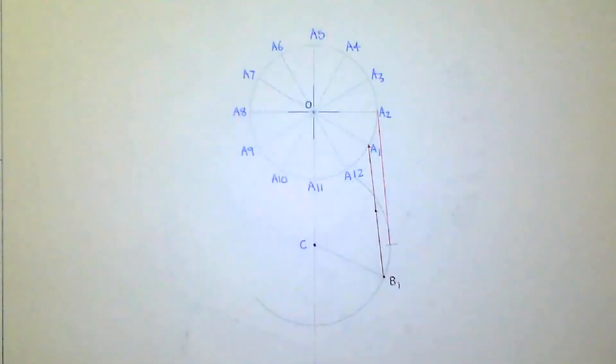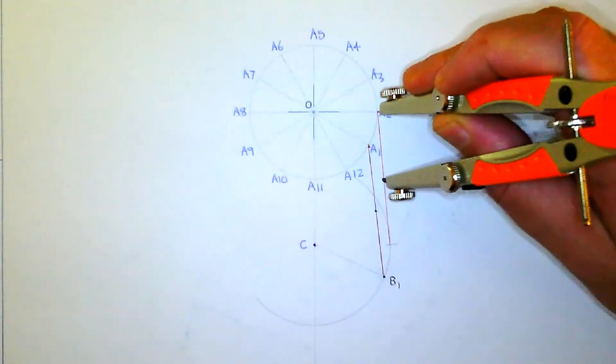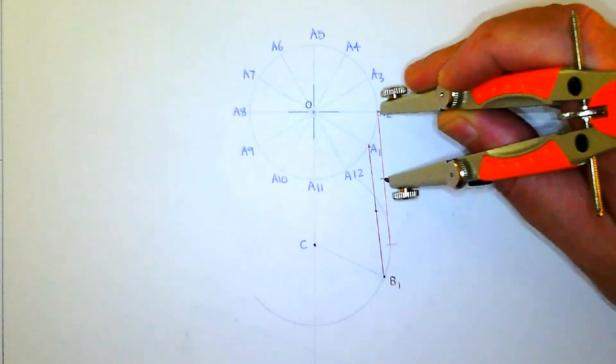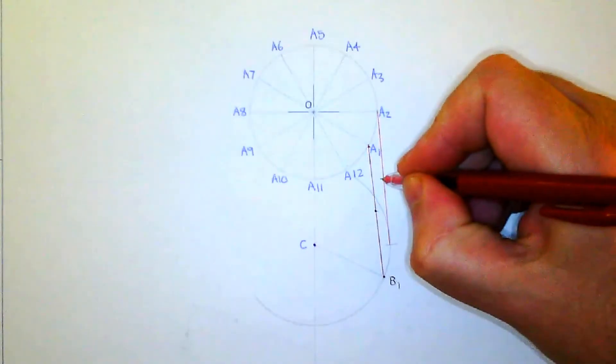There you can see the construction line. Then you take your compass which is set to 25, you put it on A2 and you mark down 25 millimeters for point B2, and then you can clearly mark that point as well.